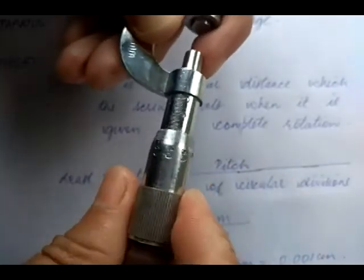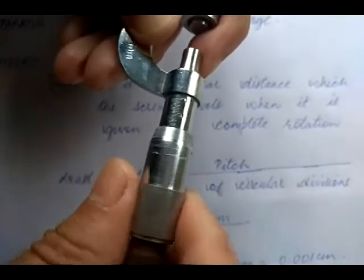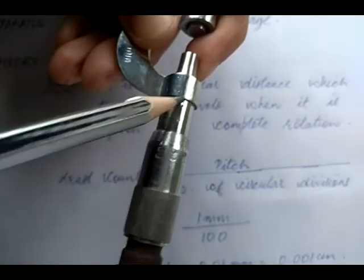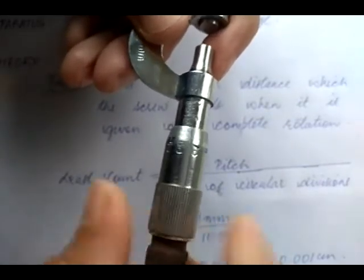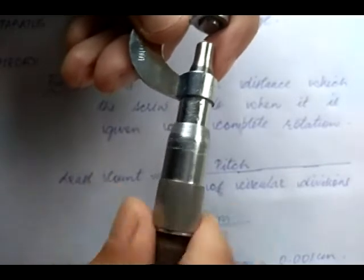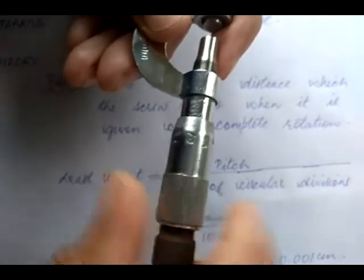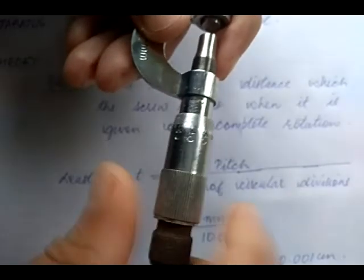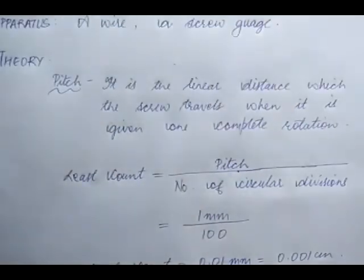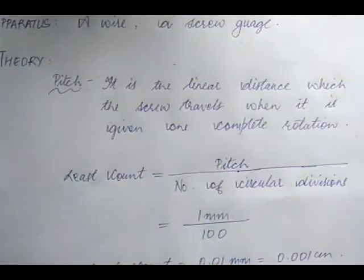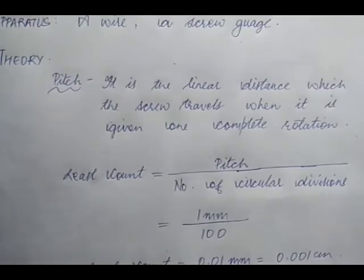As we turn the screw, it travels a certain linear distance — you can see that 10 and then 5 millimeters get covered as it moves. So when we rotate the screw, it travels some linear distance. The pitch is defined as the linear distance the screw travels when given one complete rotation.